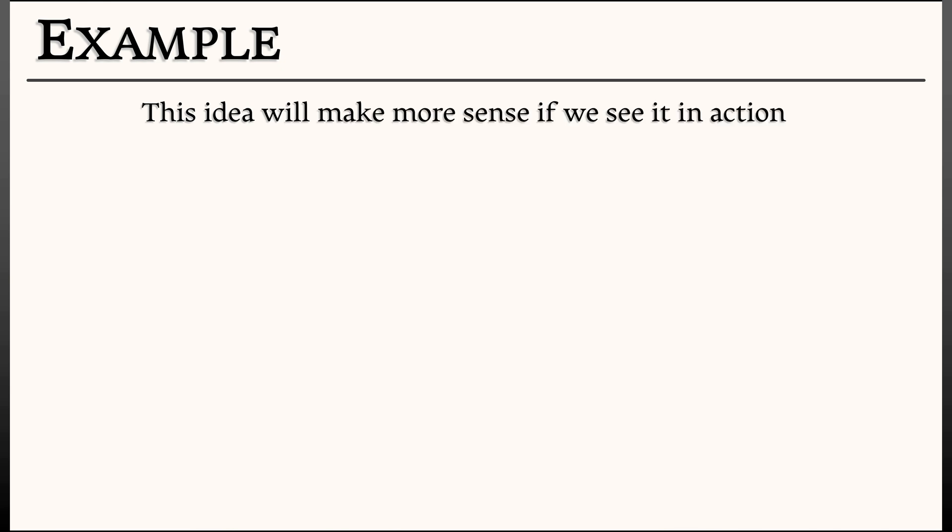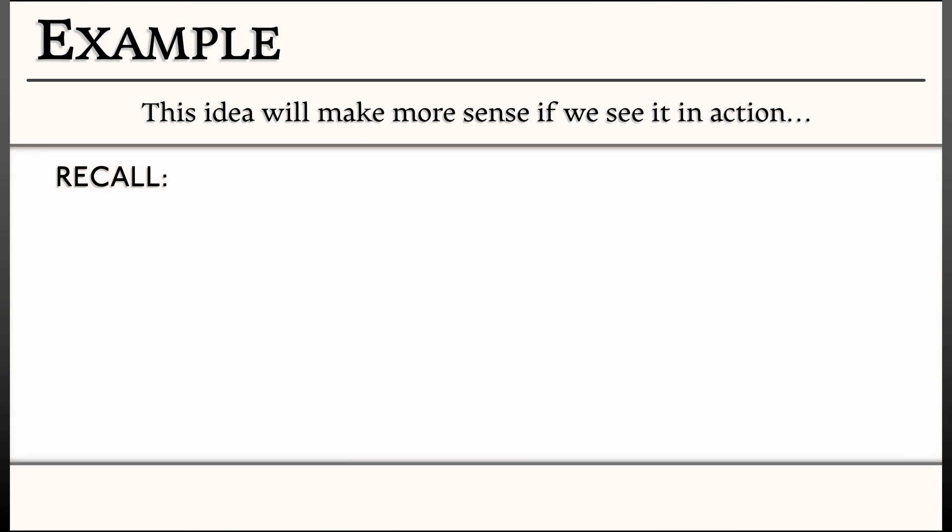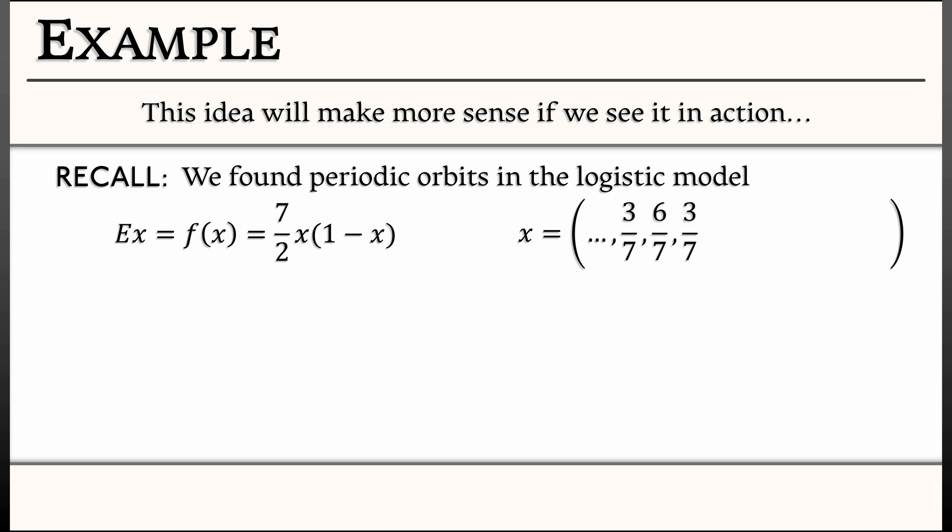Recall the periodic orbits that we found in a certain logistic model. This is the model E x equals f of x, where f of x is 7 halves x times quantity 1 minus x. One of the things that we noted was that there's a period 2 orbit that consists of the points 3 sevenths and 6 sevenths. You just bounce back and forth between those.